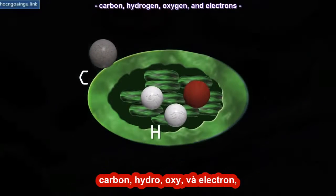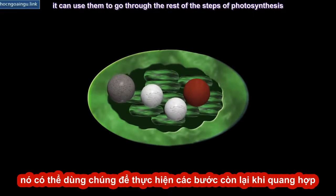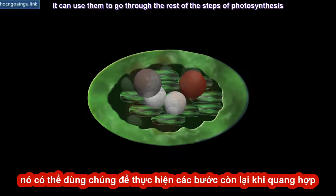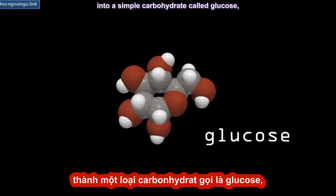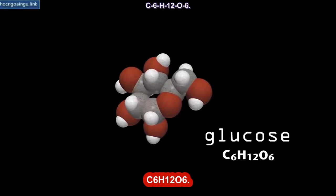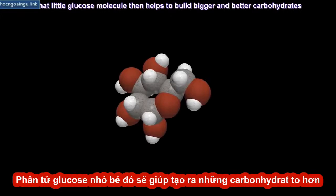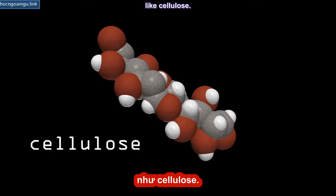So now that the chloroplast has all the building blocks — carbon, hydrogen, oxygen, and electrons — it can use them to go through the rest of the steps of photosynthesis to transform that original carbon dioxide gas into a simple carbohydrate called glucose, C6H12O6.